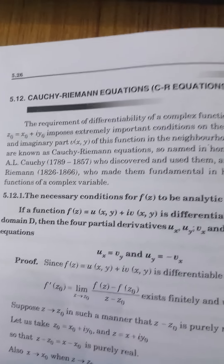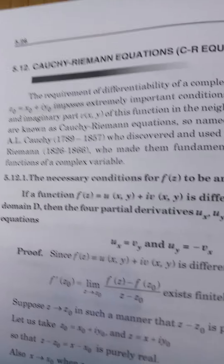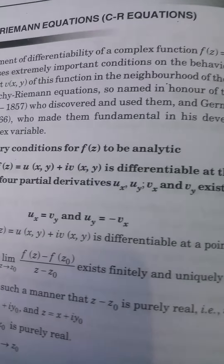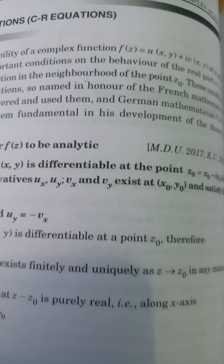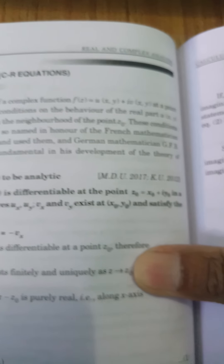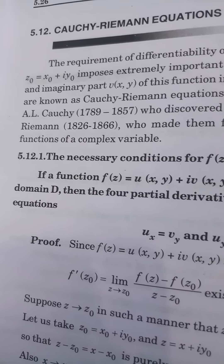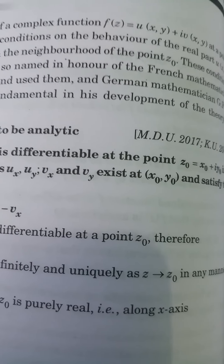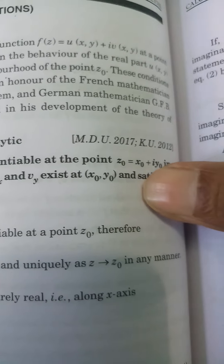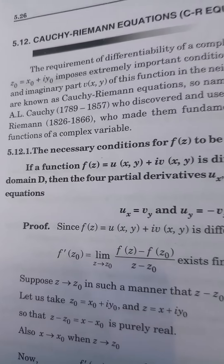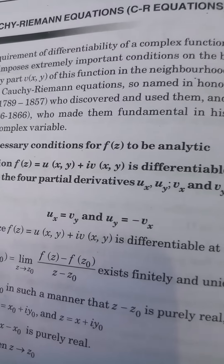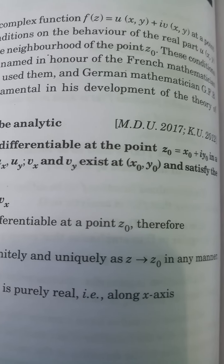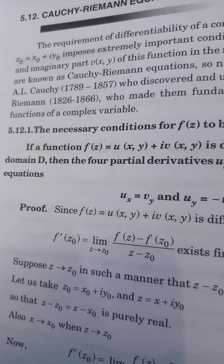Next is the very important theorem: Cauchy-Riemann equations, which in short we write as CR equations. The requirement of differentiability of a complex function f(z) = u(x,y) + i·v(x,y) at a point z0 = x0 + i·y0 imposes extremely important conditions on the behavior of the real part u(x,y) and imaginary part v(x,y) in the neighborhood of z0. These conditions are known as Cauchy-Riemann equations.